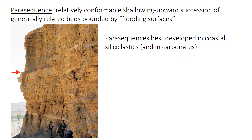So these shallowing upward cycles are called parasequences. They're very common in coastal siliciclastics as well as in carbonate sections. A parasequence is defined as a relatively conformable shallowing upward succession of genetically related beds that are bounded by these things called flooding surfaces. The traditional parasequence shallows upwards from, say, offshore facies up to shoreface or some shallower facies, and then it's capped by an abrupt deepening back to offshore, as shown in the cycles on the previous slide.